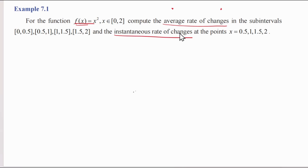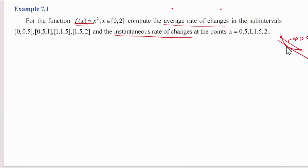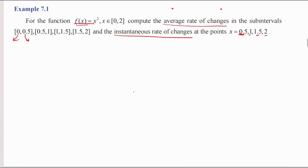The instantaneous rate of change is the slope at one particular point on the curve. So the average rate of change involves two values of x, while the instantaneous rate of change involves only one value of x. Now, the average rate of change is computed using a formula. Let's look at this solution.